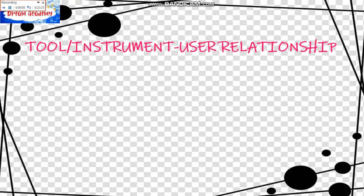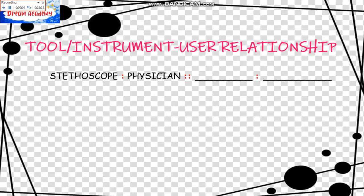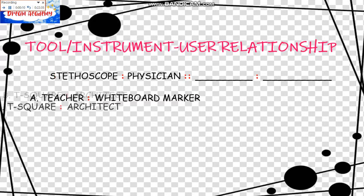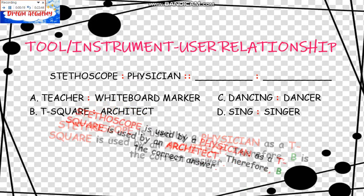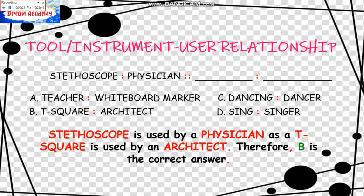Tool-Instrument-User Relationship. The example is: Stethoscope is to Physician as blank is to blank. The choices are: A, Teacher is to Whiteboard Marker; B, T-Square is to Architect; C, Dancing is to Dancer; D, Sing is to Singer. Stethoscope is used by a Physician as T-Square is used by an Architect. Therefore, B is the correct answer.